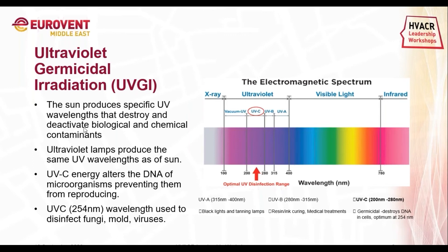Moving to ultraviolet germicidal irradiation: the sun produces specific UV wavelengths that destroy and deactivate biological and chemical contaminants. The electromagnetic spectrum includes different wavelengths, describing all kinds of light including those the human eye cannot see. The visible light we can see is made of individual colors. The other types of light are ultraviolet, X-rays, and infrared. Within ultraviolet there are four types: UVA between 315–400 nm, UVB between 280–315 nm, UVC between 200–280 nm, and UVV between 100–200 nm.